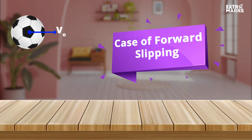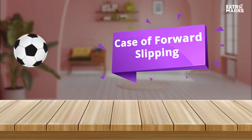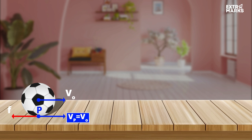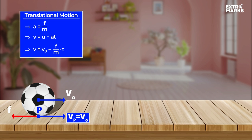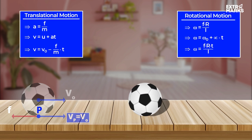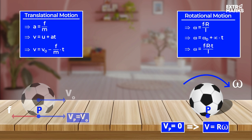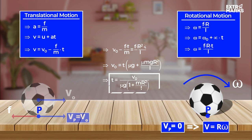Now consider another case: the circular object has only a linear velocity and is placed on a rough surface. The point of contact has a linear velocity, so a friction force acts opposing it. This friction force reduces the linear velocity and increases the angular velocity. After some time t, the linear velocity has reduced and angular velocity has increased such that v = rω is satisfied and pure rolling begins — again giving us the value of time.